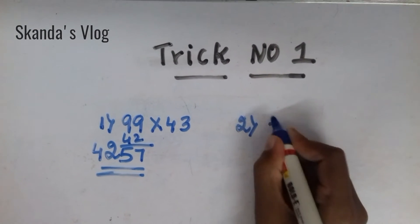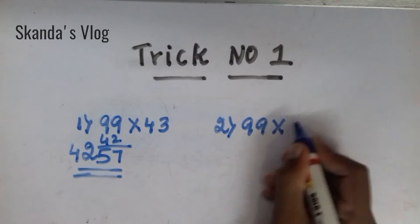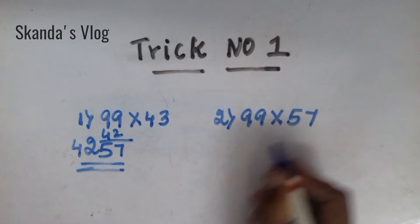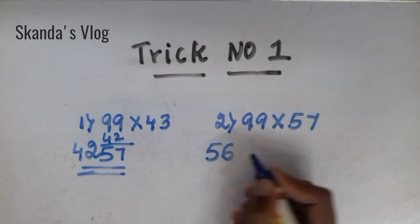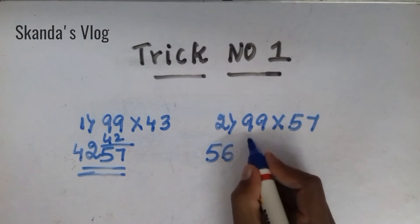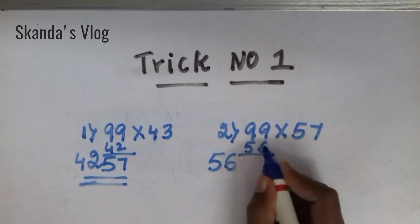Now, second one. The same 2 digit numbers multiplication. This 56, you keep on digit less. Now, 56.